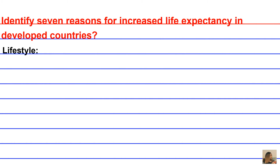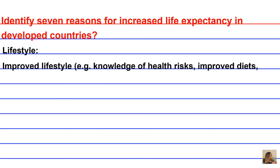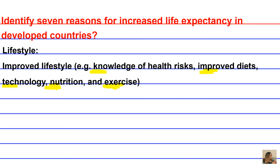A second area would be lifestyle. People now have more knowledge of health risks, so they improve their diets. Technology — phones, PCs, laptops — also increases life expectancy by giving us knowledge about health risks. People are researching all these different diets, like the paleo diet and alkaline diet, so nutrition is definitely improving. Gym membership and exercise — a lot of people participate in various athletic activities, resulting in improved health and thus improved lifestyle.